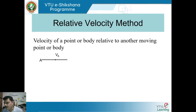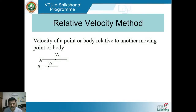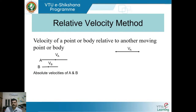Consider body A and body B, where velocity of body A is VA and velocity of body B is VB, with VA greater than VB. The absolute velocity of A is VA and absolute velocity of B is VB. The resultant velocity will be in the direction of VA because VA is greater than VB.